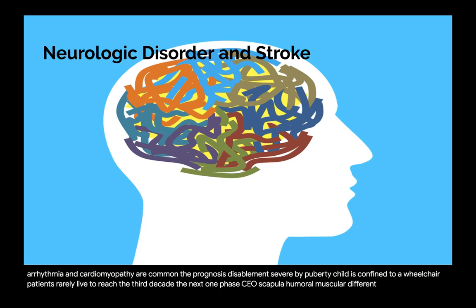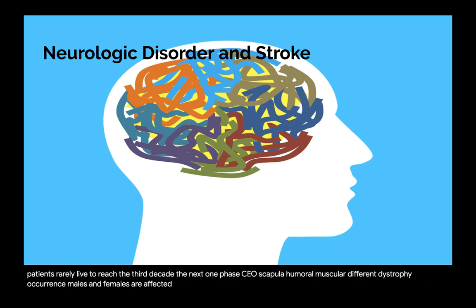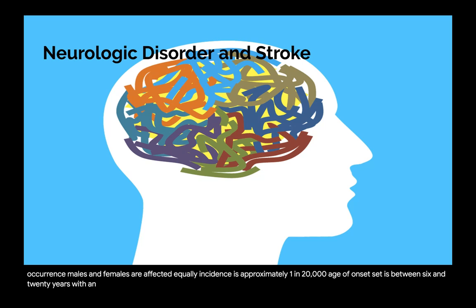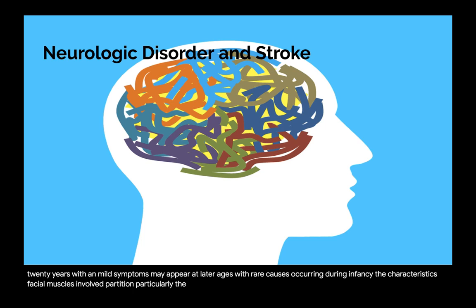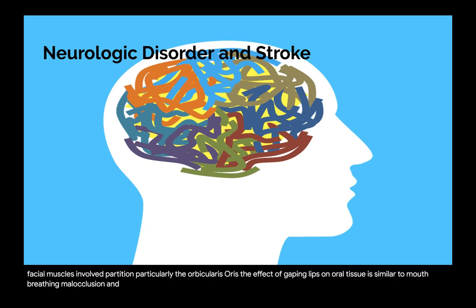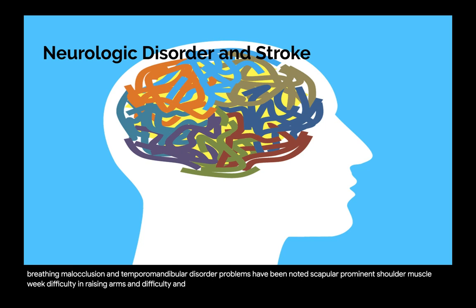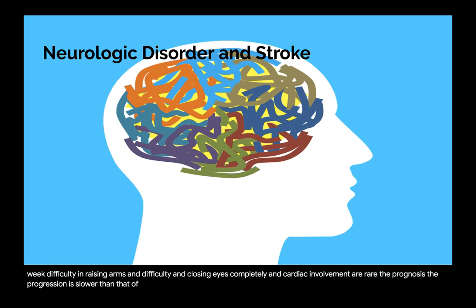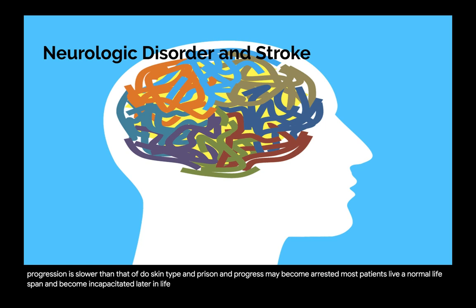Facioscapulohumeral muscular dystrophy affects males and females equally, with an incidence of approximately 1 in 20,000. Age of onset is between 6 and 20 years with an average age of 13 years. The facial muscles are involved, particularly the orbicularis oris — the effect of gaping lips on oral tissue is similar to mouth breathing. Malocclusion and temporomandibular disorder problems have been noted. Shoulder muscles are weak with difficulty raising arms. The progression is slower than Duchenne type and most patients live a normal lifespan.